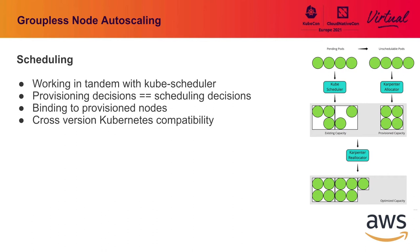There are some benefits to enforcing the binding decision. Because we've already bound the pod, the second the node comes online you can start pulling the image, because you already know the binding decision — you don't have to wait for the node to become ready or for the kube scheduler to schedule it. So we get about five seconds of latency improvement, which is quite nice.